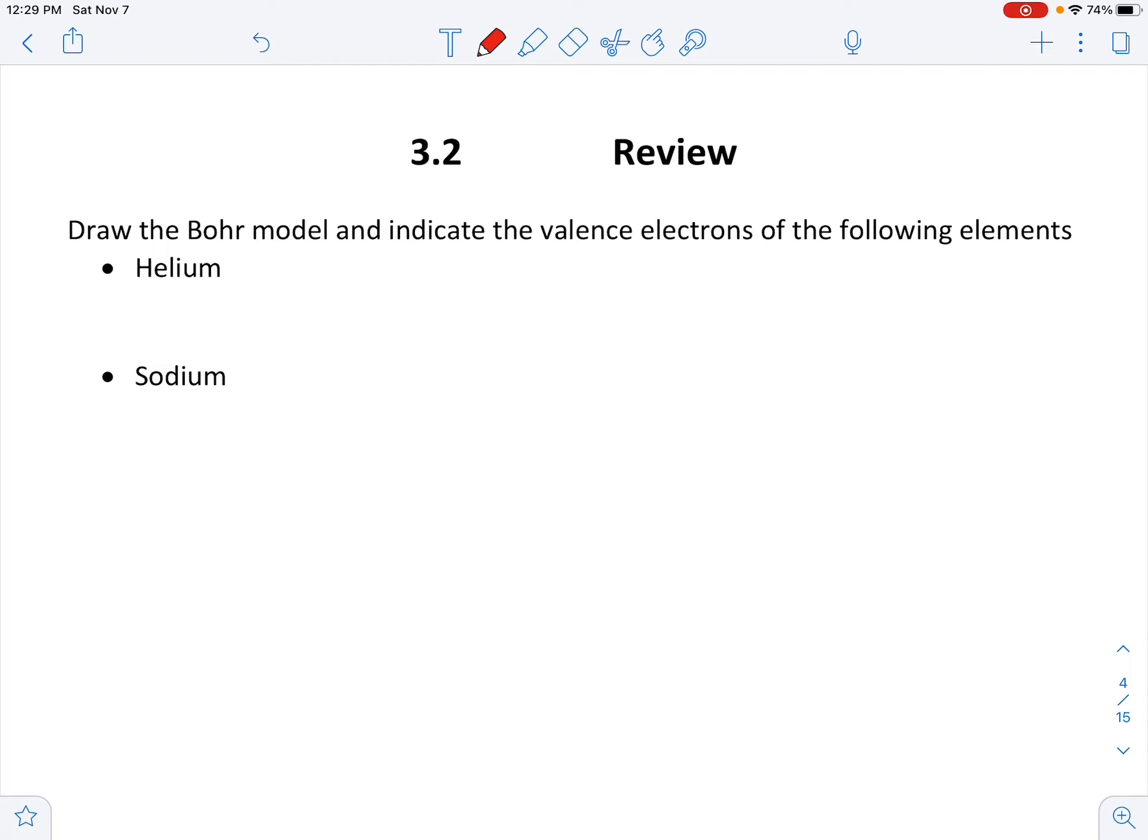So your job here is to draw the Bohr model and make sure you indicate valence electrons for the following elements. We've got helium and we've got sodium. Hit pause, draw your pictures, meet me down below.